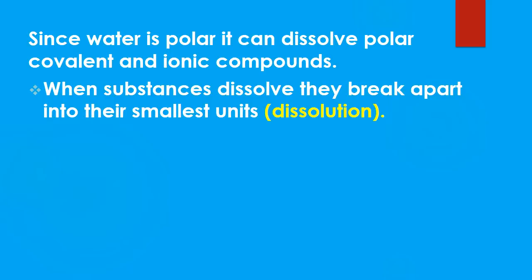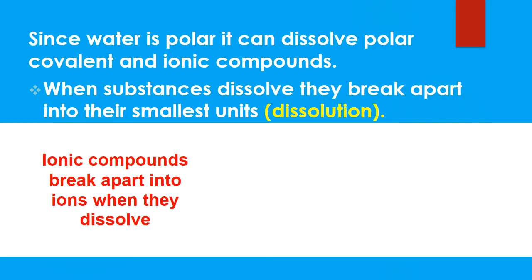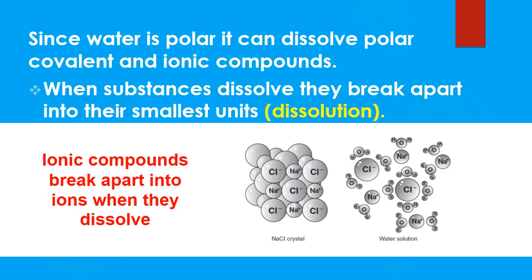When they dissolve, we know they break apart into their smallest units — that's called dissolution. They seem to disappear because they break apart into particles so small we cannot see them with the naked eye. When we put sodium chloride in water, ionic compounds break apart into ions. Sodium chloride breaks apart into sodium ions and chloride ions. We can see the salt as we put it in, but once dissolved, it seems to disappear because the ions are too small to see with the naked eye.